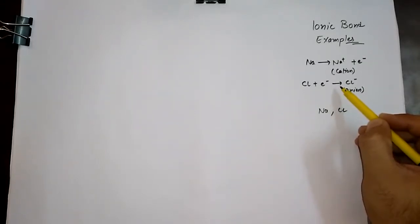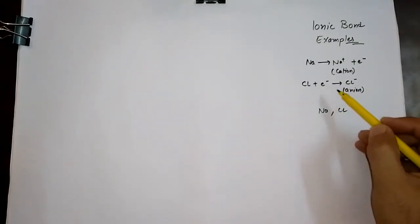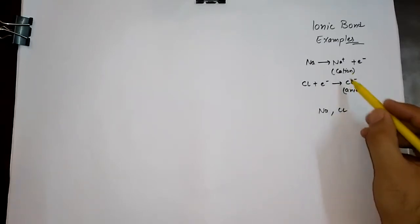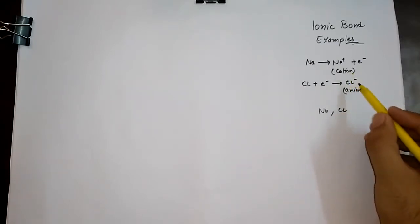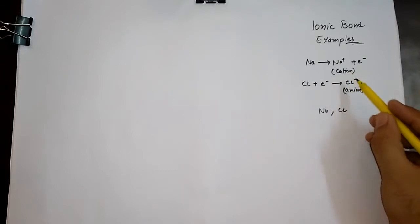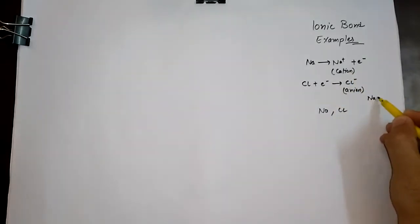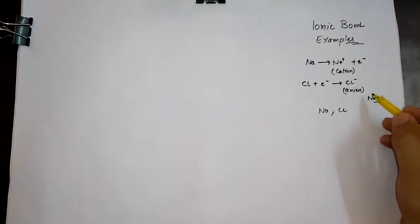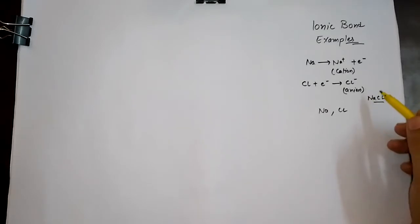Remember, in the formation of a molecule, the cation and anion will attract each other because they have opposite charges, and they will form the bond. This complete bond we call the NaCl molecule.